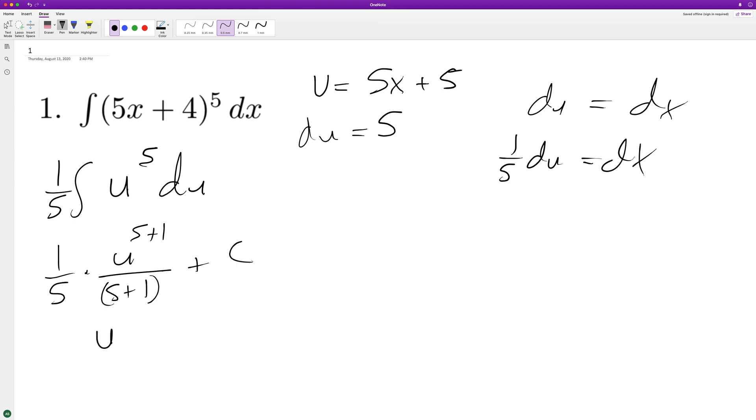We end up with u to the 6th over 5 times 6, which is 30, plus c. Substituting back in, we get 1/30 times the quantity 5x plus 4 raised to the 6th plus c.